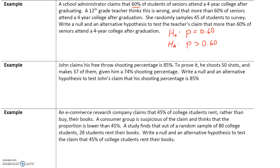Key words to look for in the claim for the alternative hypothesis: do we have 'more than,' 'less than,' or 'not equal to'? That will determine the sign of the alternate hypothesis. The null hypothesis will always have an equal sign. To recap: the null hypothesis is the accepted or believed fact — the school administrator's claim that p = 0.60 — and the teacher is claiming p is greater than 0.60. In both hypotheses the proportion is the same; only the sign differs.